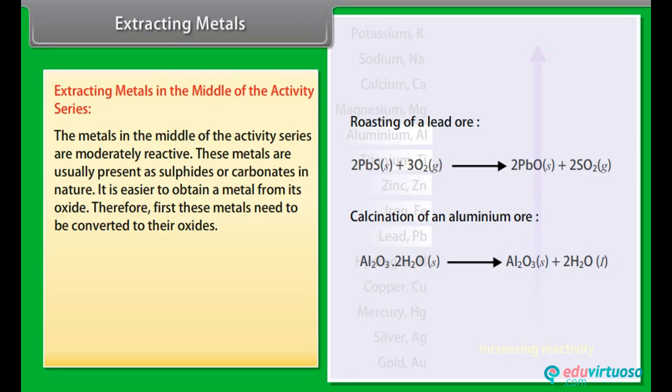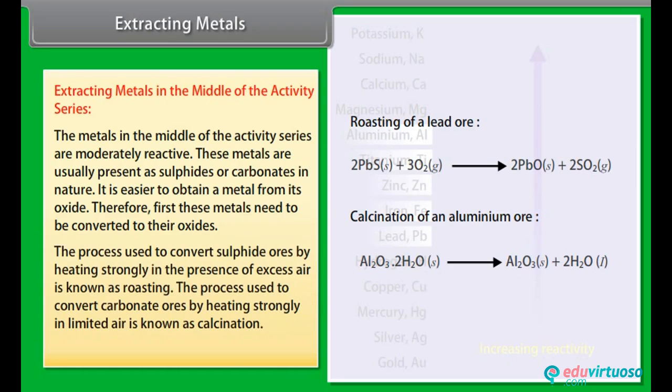Therefore, first these metals need to be converted to their oxides. The process used to convert sulphide ores by heating strongly in the presence of excess air is known as roasting. The process used to convert carbonate ores by heating strongly in limited air is known as calcination.